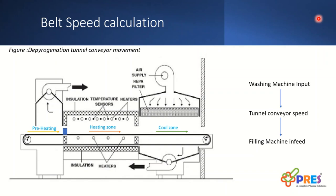This figure depicts a depyrogenation tunnel where preheating zone connects with the washing station. The container will move through preheating, heating, and cool zones based on the conveyor belt speed.